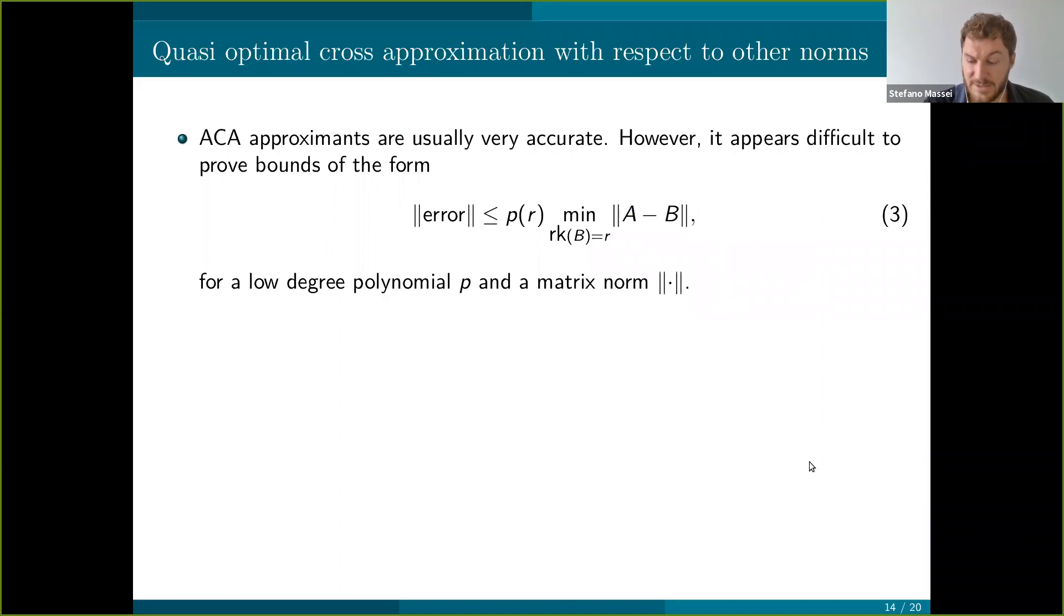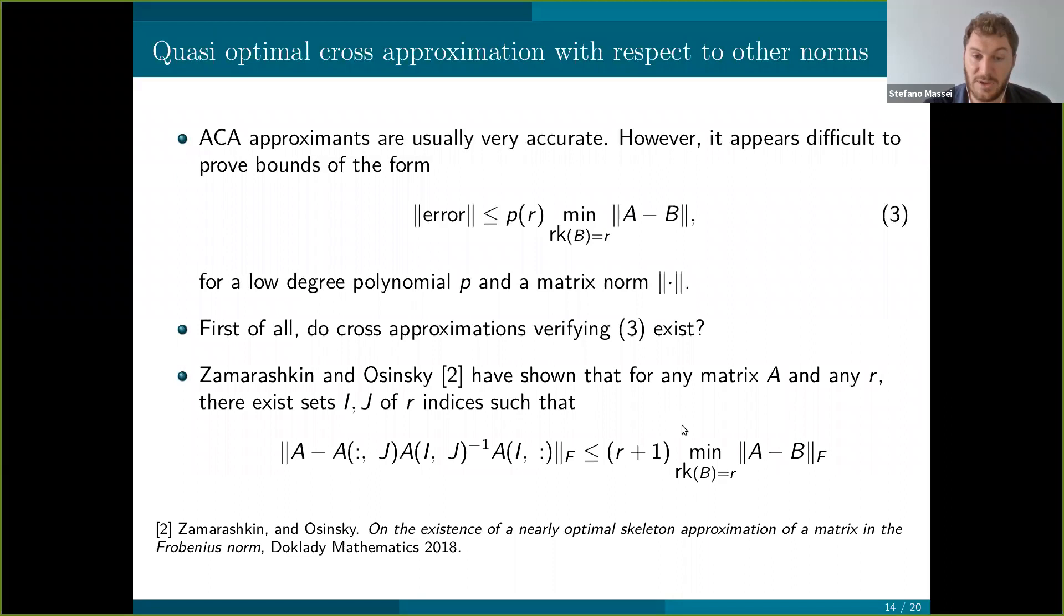In the second part of the project, we focus on other norms. Our goal was to find alternative ways to provide cross approximation that can guarantee to have a bound on the error of this form, where we have the same norm on the left-hand side and on the right-hand side. For example, does such a bound hold in the Frobenius norm? The first question that one has to address is whether such approximation exists because it's not obvious. We are looking for very special low rank approximation built on rows and columns of the target metrics.